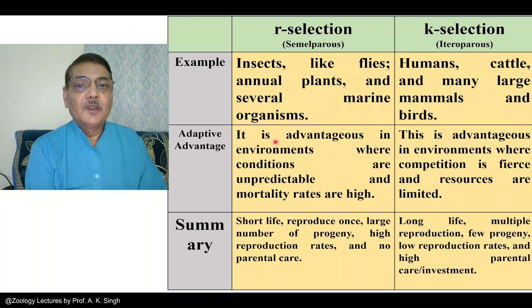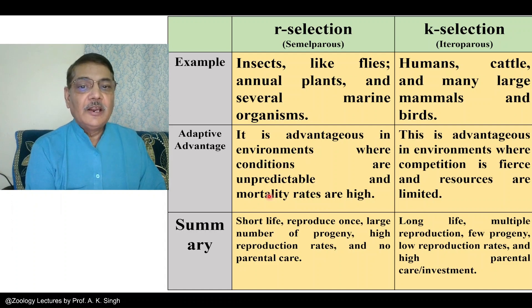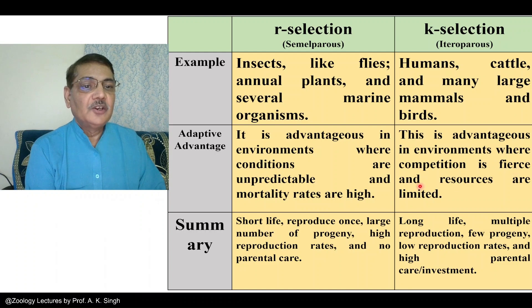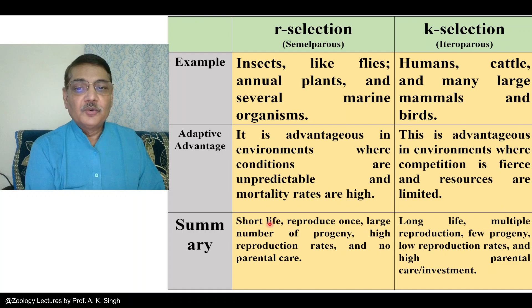Regarding adaptive advantage, R selection is advantageous in environments where conditions are unpredictable and mortality rates are high. Whereas K selection is advantageous in environments where competition is fierce and resources are limited. To summarize, R selection shows a short lifetime, reproduction occurs just once or maybe twice in life, and a large number of progeny are produced.